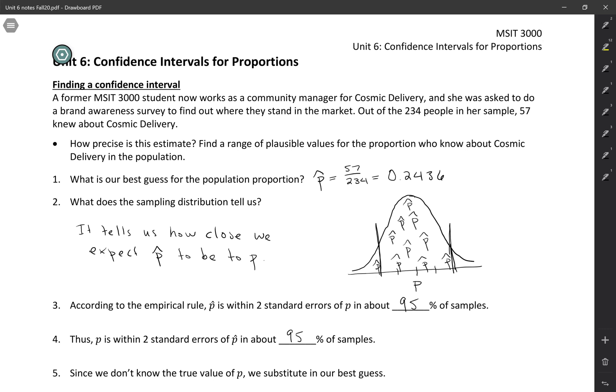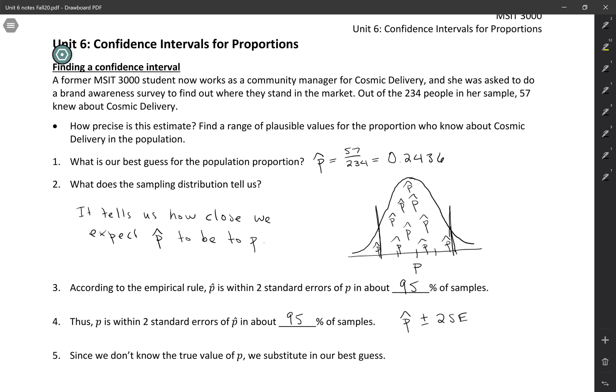So this is useful because we can take our p hat value, which is what we would have in real life, we have a sample proportion, and we can add two standard errors to each side or add and subtract two standard errors from each side. And we know that the true parameter will be within that range for about 95% of samples.